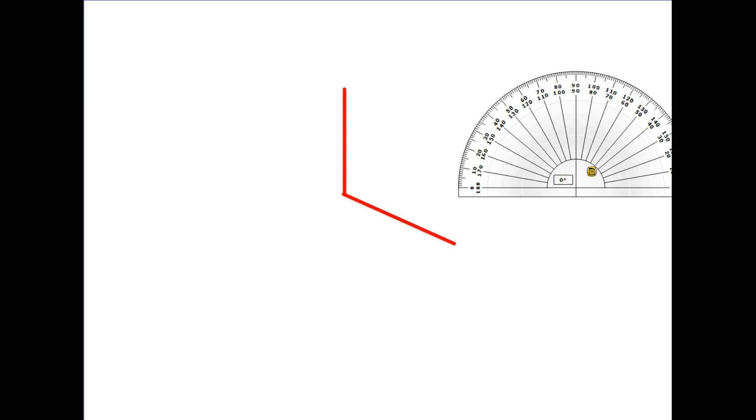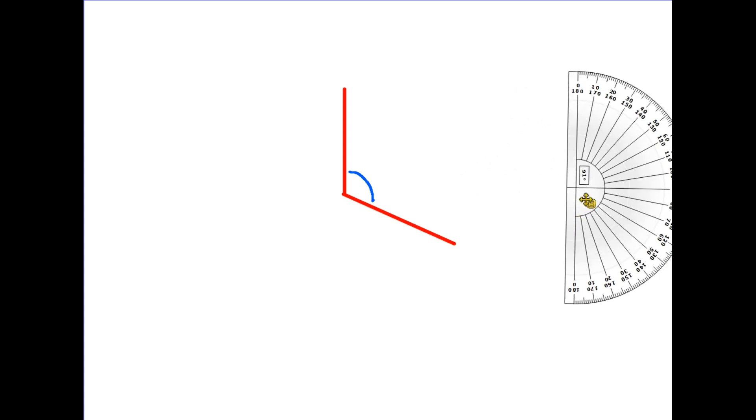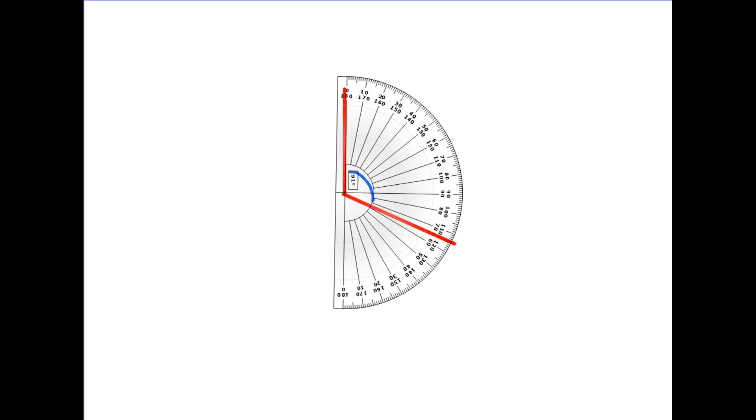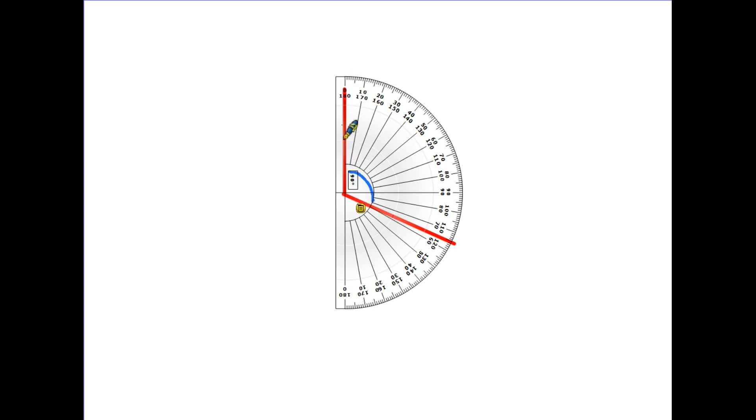If we want to measure an angle, let's say the angle here is larger than 90 less than 180 therefore it's an obtuse angle, we're going to need a protractor. In order to measure it the first thing we need to do is move the protractor so the little cross line in the center is in the center of the angle. We then turn it so that the zero line is along one side of the angle and then we measure around the outside. In this case we are looking at 115 degrees.